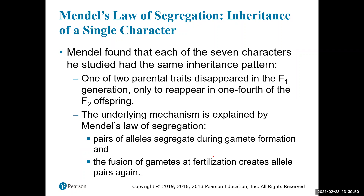When Mendel looked at all seven characters, he found that they had the exact same inheritance pattern: one of the two parental traits disappeared in the F1 generation and reappeared in 25% of the F2 generation. That mechanism is explained by the law of segregation — pairs of alleles segregate during meiosis, and the fusion of gametes at fertilization creates those allele pairs again.